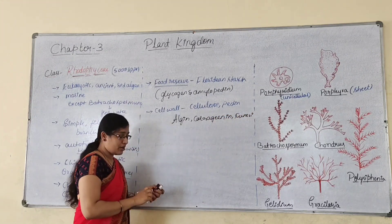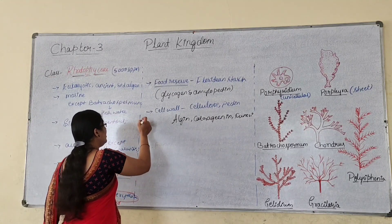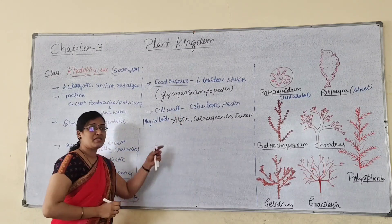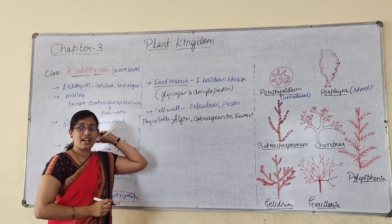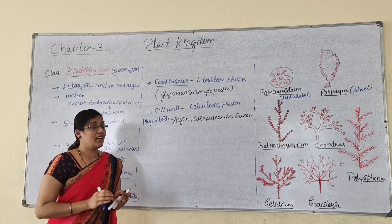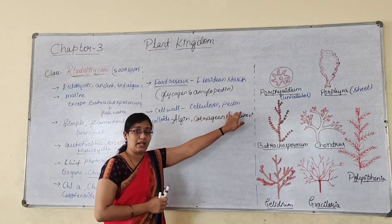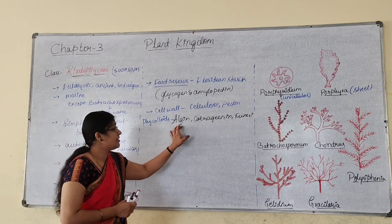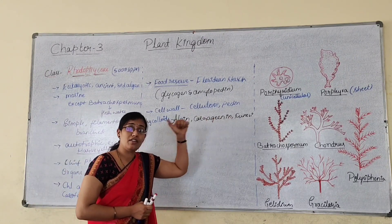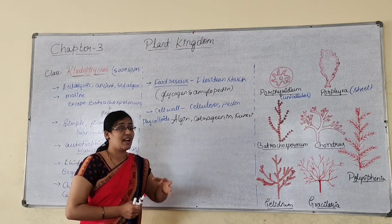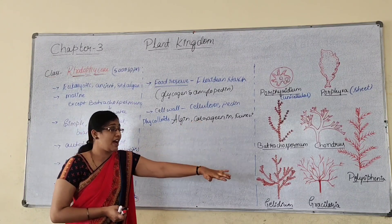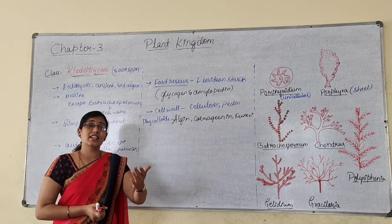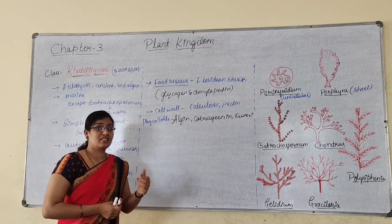These are all phycocolloids present in the cell wall of red algae. The red algae cell wall is made up of cellulose and pectin, and phycocolloids like algin, carrageenan, and funori. These algin and carrageenan are extracted from Gelidium and Grateloupia and have certain economic importance, which we shall discuss later.